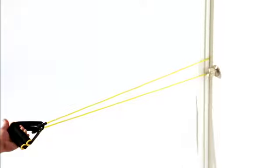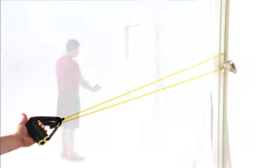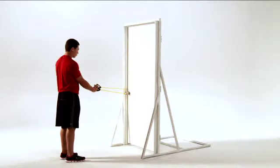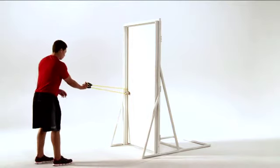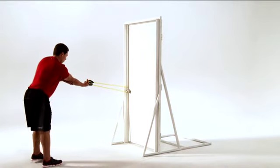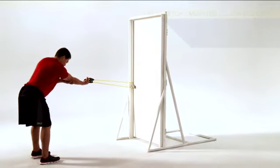Attach a resistance band to a middle anchor point. Stand facing the anchor point, holding the band in one hand with your arm extended in front of you and your palm facing up. Stabilize your elbow with your opposite hand and take a small step back to create tension on the band.